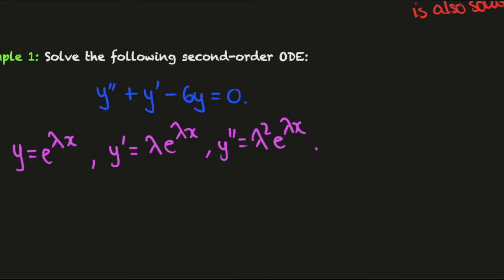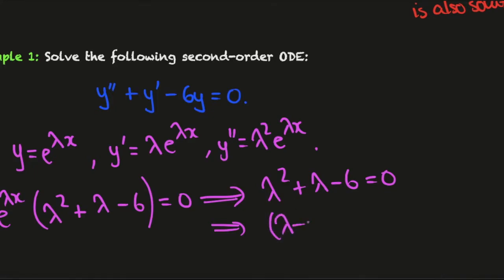Inserting these into the equation, we get lambda squared plus lambda minus 6 equals 0. The exponential comes out front, but since it's always positive, we can divide it out. Factorizing: (lambda - 2)(lambda + 3) = 0, so lambda is 2 or lambda is -3.